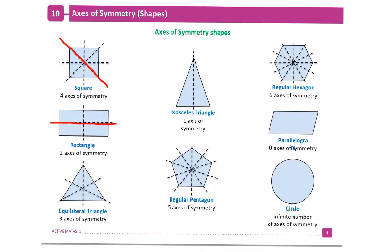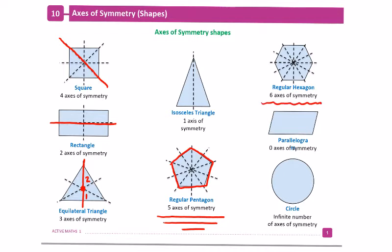An equilateral triangle has three axes of symmetry — we'll see a relationship here with the ratio between the lengths of these sides. An isosceles triangle has just one, straight down. A pentagon has five sides, as you know from junior school, and it has five axes of symmetry. A hexagon has six sides so it has six axes of symmetry.